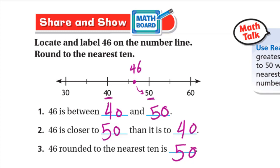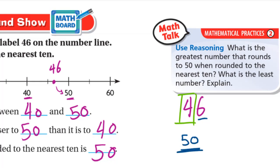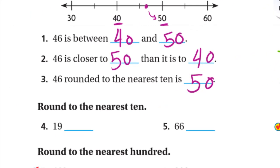Using the weak and strong method on 46: we are rounding to the nearest 10, so the tens digit is 4. The digit to its right is 6, which is a strong digit, so 46 rounds up to 50. Next, round 19 to the nearest 10: the tens digit is 1, and the digit to its right is 9, which is strong, so it rounds to 20.